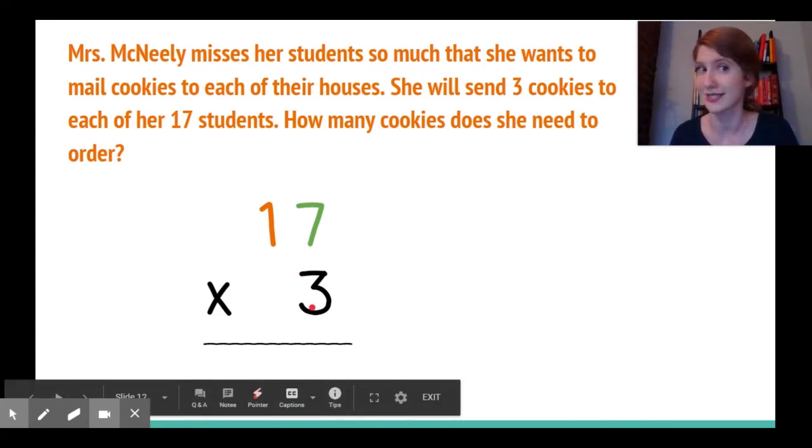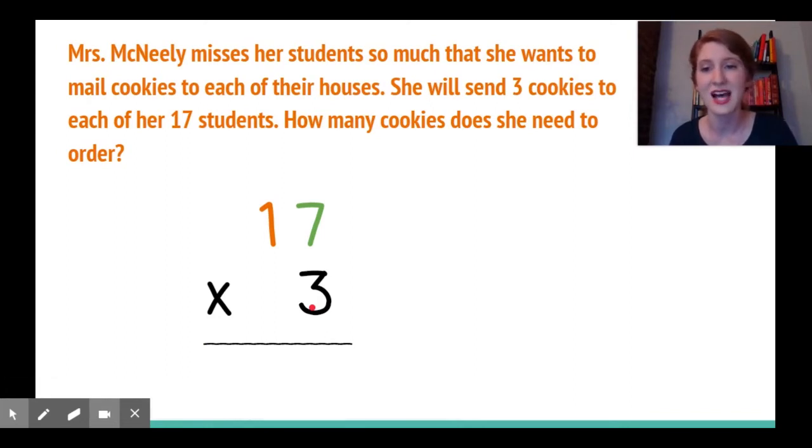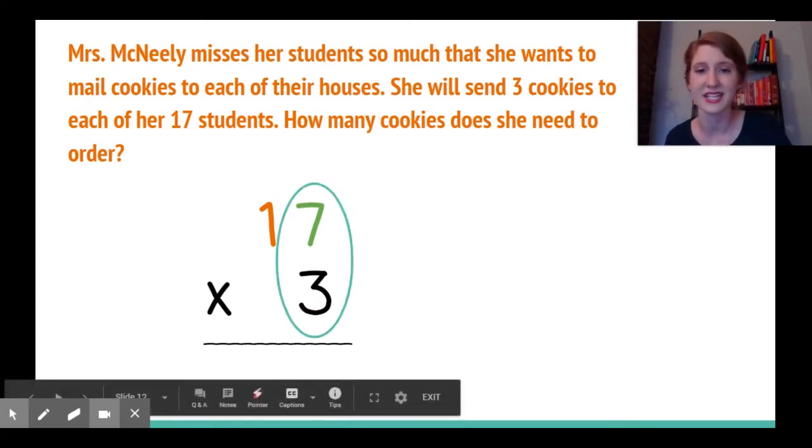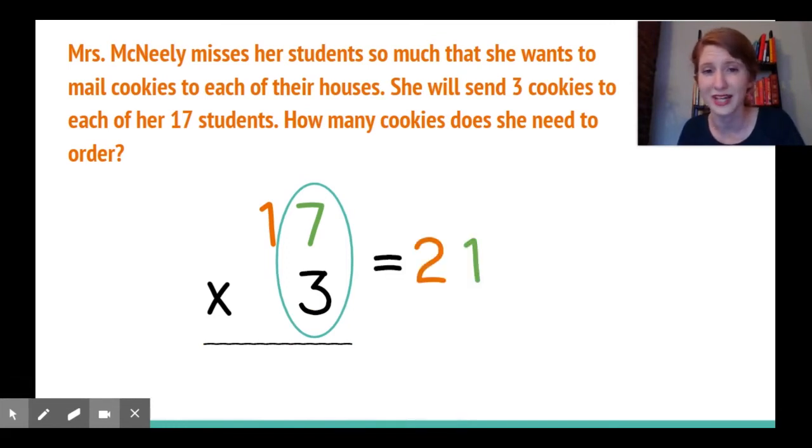Now just like when I add and subtract, I'll start in the ones place. Seven times three equals twenty-one, but I can't write twenty-one in the ones place, so I'll put my one down and I'll regroup my two tens into the tens place with a reminder to add them. I already multiplied them, I don't need to multiply those two again.